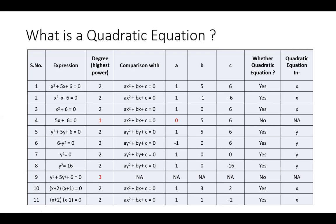Or we can simply say that it is a quadratic equation in y, because the highest power of y is 2 and the value of a is 1, which is not 0. We simply check the a value — if a is not equal to 0, it is a quadratic equation. B and c can equal 0.